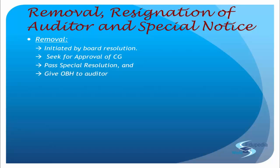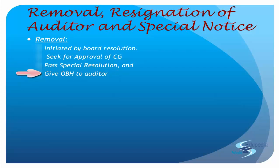Once the application in Form ADT-2 is filed, the central government will take its time to respond. When the central government grants approval, within the next 60 days of receiving that approval the board of directors must call a general meeting of the members. They will then pass a special resolution and finally remove the auditor. Importantly, before going ahead with the removal, the auditor must always be given an opportunity of being heard.